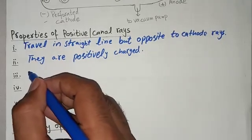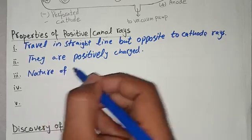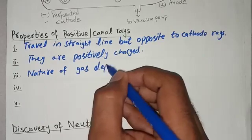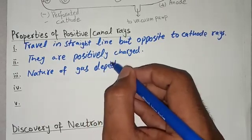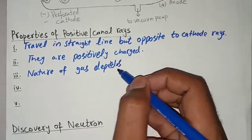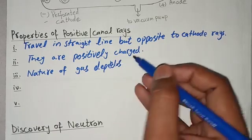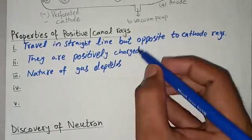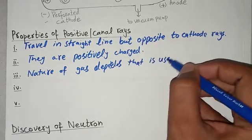The third property is that the nature of these rays depends on the nature of the gas used in the discharge tube. Unlike cathode rays, whose nature does not depend on the gas, the nature of canal rays depends on the gas that is used in the discharge tube.